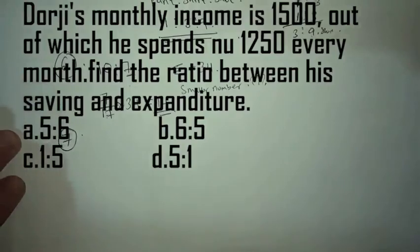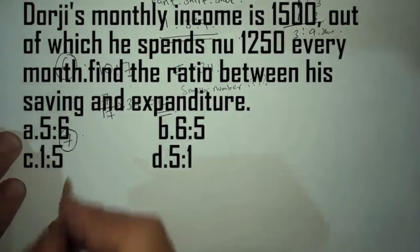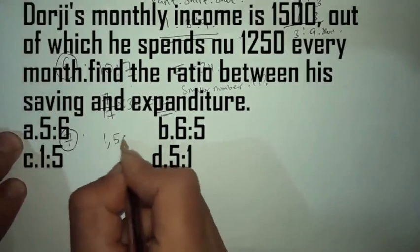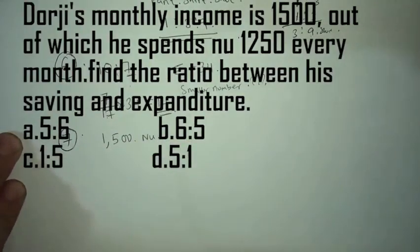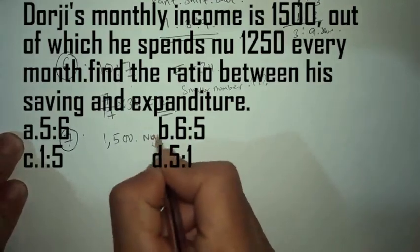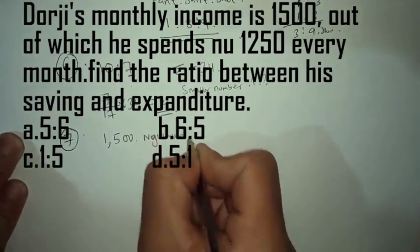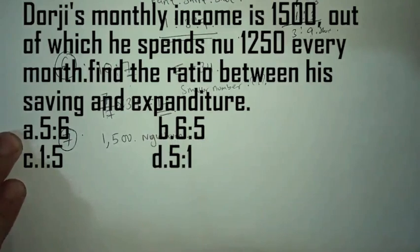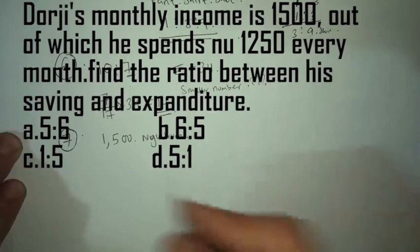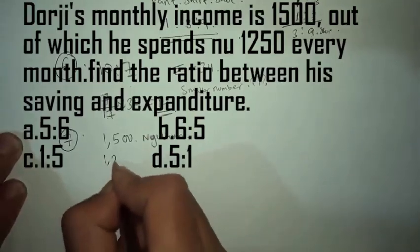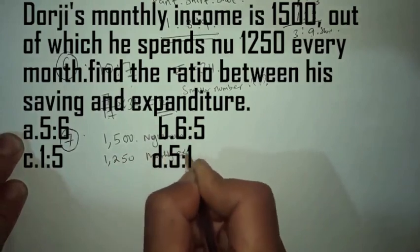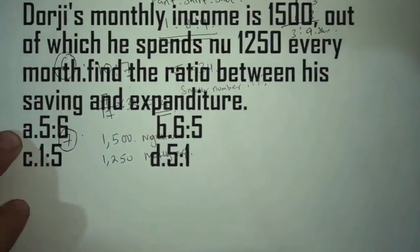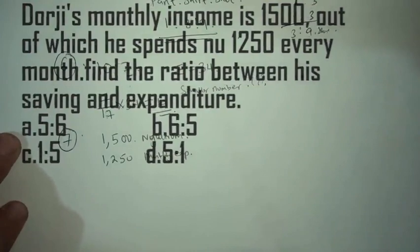Question number 7: Dorji's monthly income is 1500, of which he spends 1250 every month. Find the ratio between his saving and expenditure.